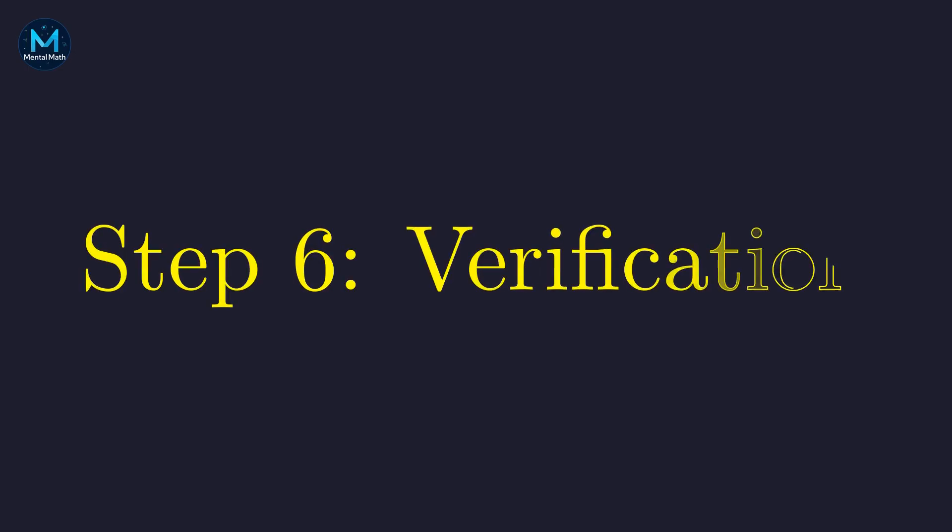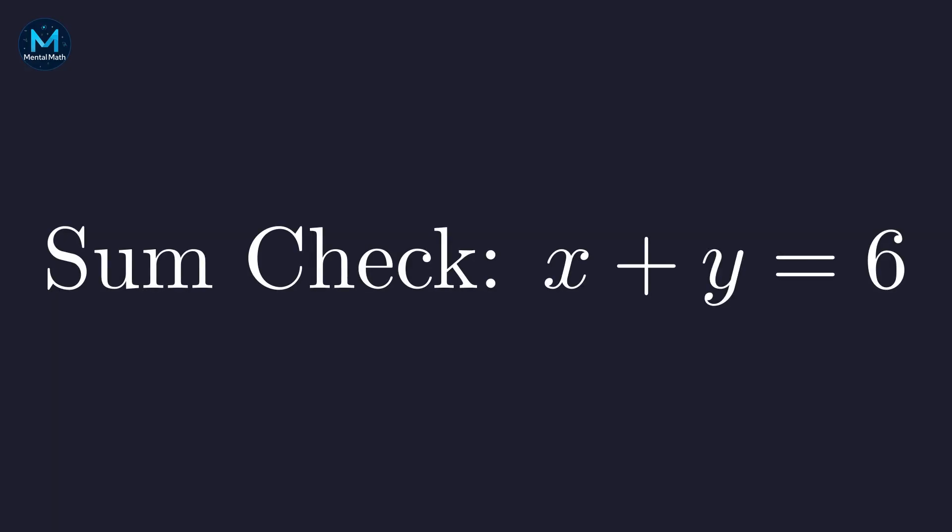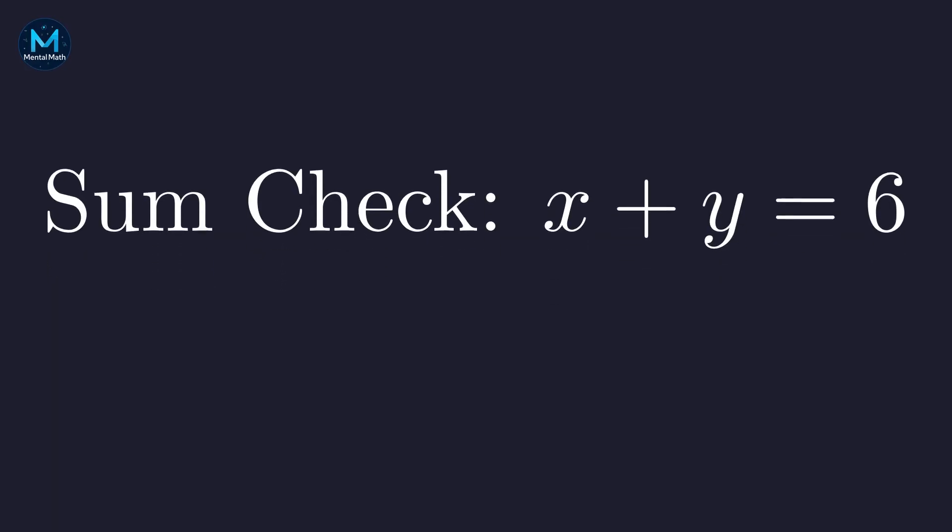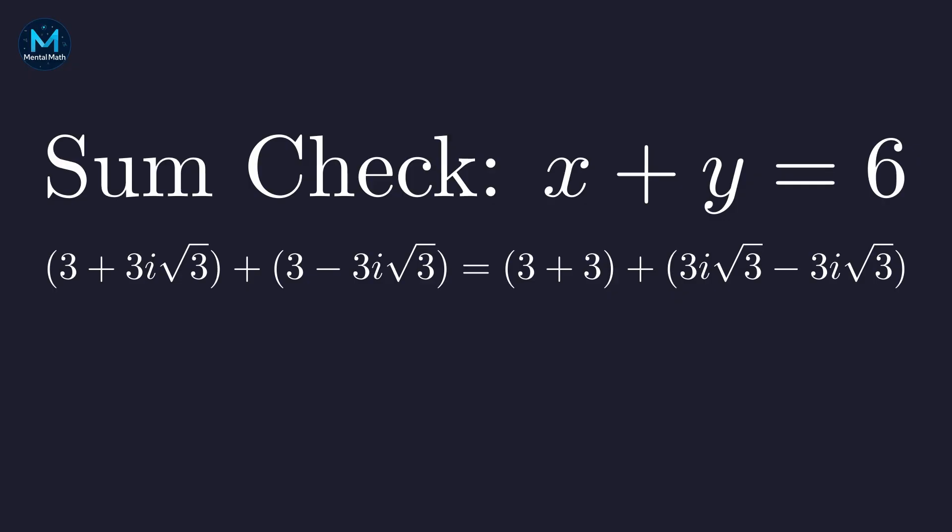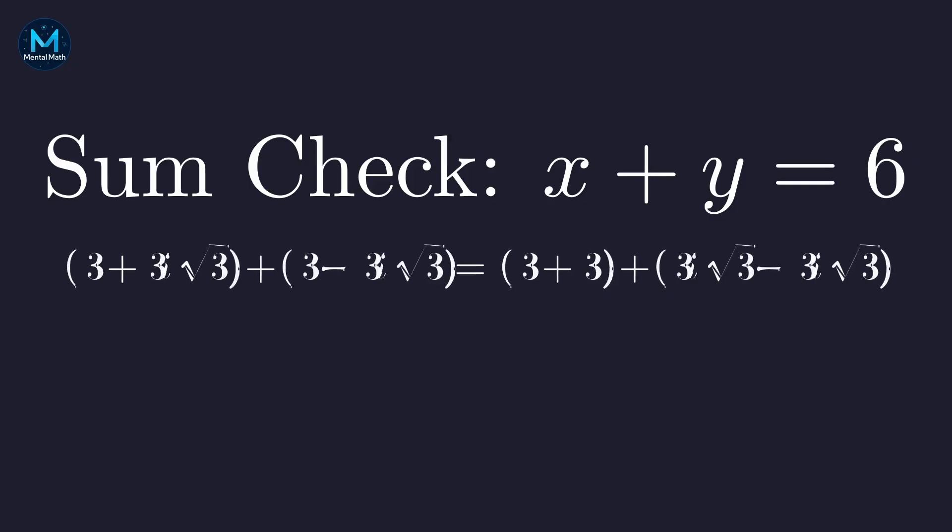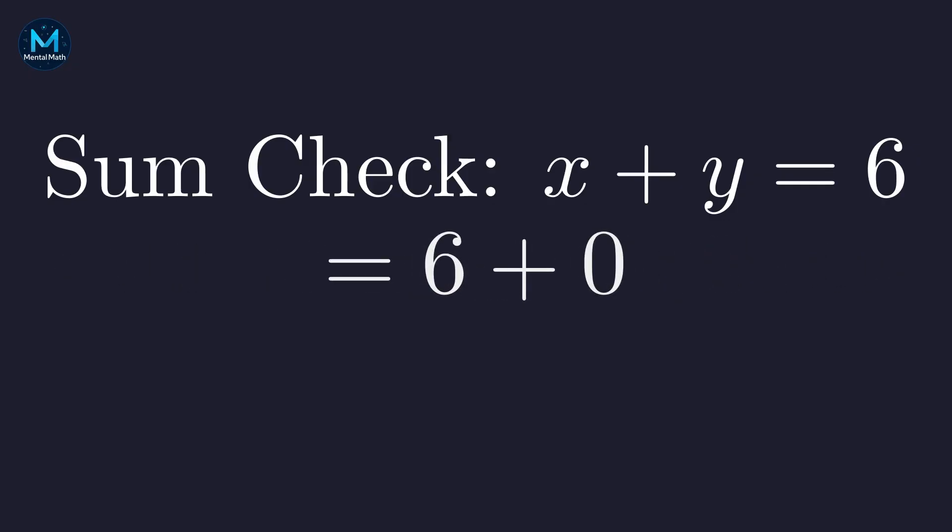Now let's verify these actually work in our original equations. First, checking that x plus y equals 6. Grouping the real and imaginary parts separately, the imaginary parts cancel perfectly, leaving just 6. Check! The sum works!